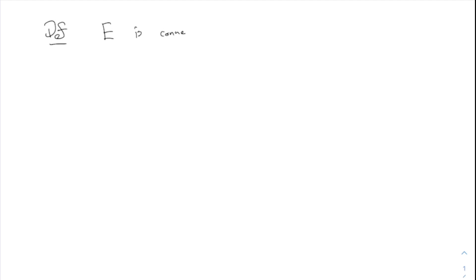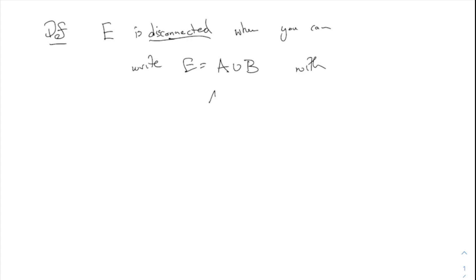We were talking about connected sets last time. I'll refresh your memory — the definition is not at all obvious. We actually define what it means to be disconnected first, and then connected is just the opposite, because it's easier to say what disconnected means. E is disconnected when you can write E equals A union B, where A-closure intersect B is the empty set, and A intersect B-closure is the empty set.